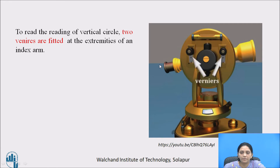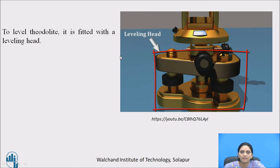The third part of the theodolite is the vernier. In the image you can see two verniers fitted to measure the vertical angle. To read the reading of the vertical circle, two verniers are fitted at the extremities of an index arm. To level the theodolite, it is fitted on the leveling head, which is also an important part of the theodolite. In the image it is highlighted by the red part. With the help of the leveling head, we level the instrument.